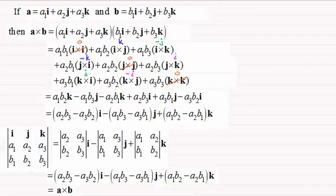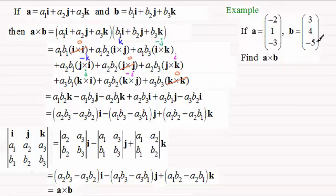Now I've got an example here that you might like to have a go at. I'm going to run through it anyway but just give you a moment to pause the video if you'd like to try it. We've got the vector a with components minus 2, 1, minus 3 and the vector b with components 3, 4, minus 5 and we've got to find a cross b then.